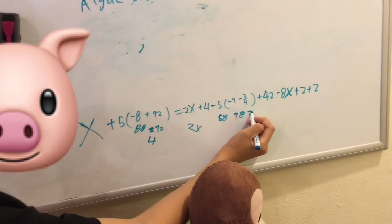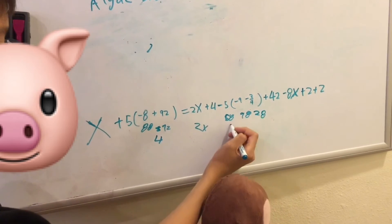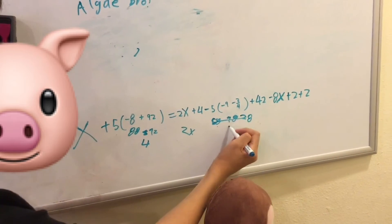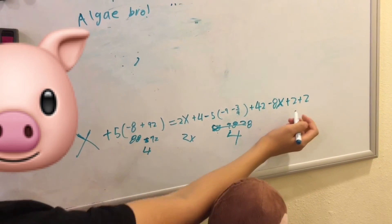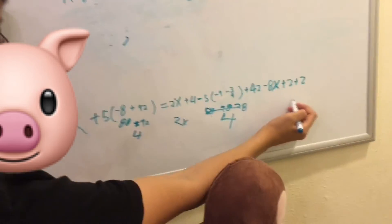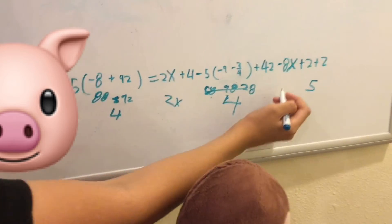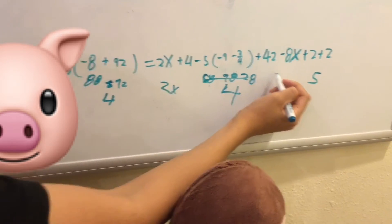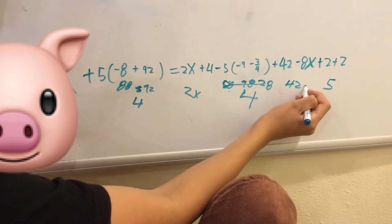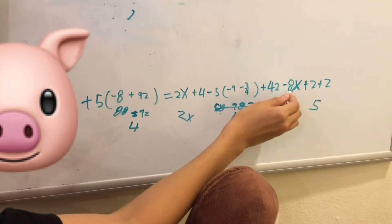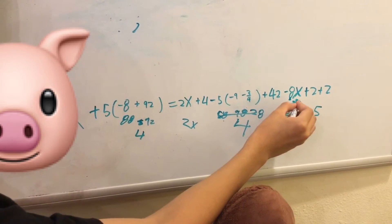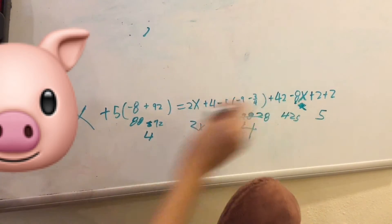2 plus 8. 28. 58 is 4. 42 plus, oh, 2 plus 2 is 5. Remember? So, 42 plus 5 is 425. And now we need to add this right here. 88X. Whatever. We're going to do it to this side.